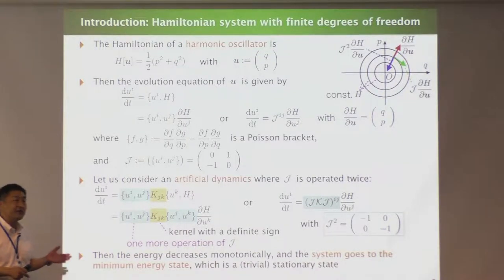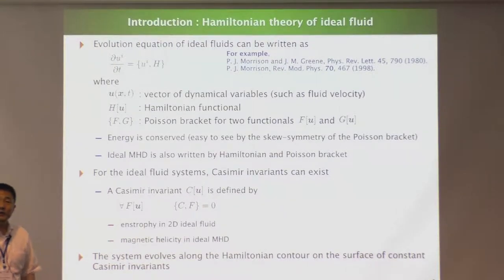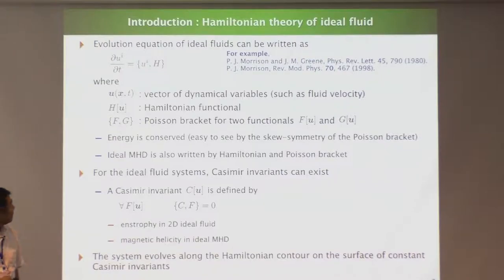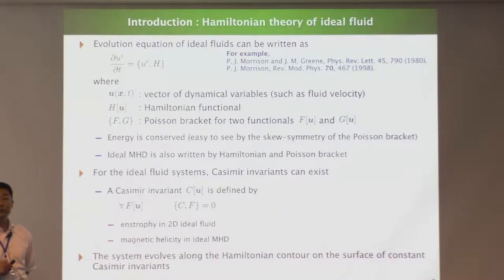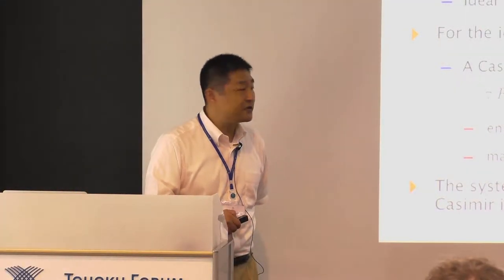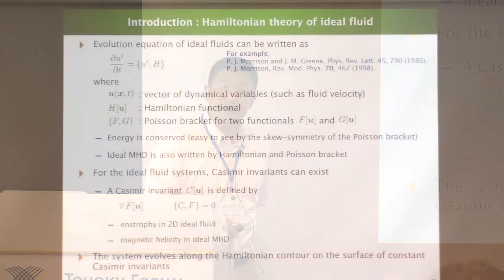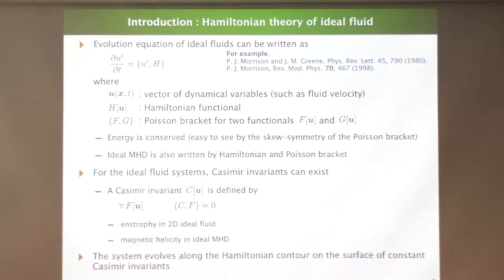Ideal fluid can also be written using Poisson brackets and a Hamiltonian. In this case, U is a field variable like the velocity field or magnetic field. The Hamiltonian H is given by this expression, and this is the Poisson bracket for the fields. Without dissipation the energy is conserved, because this is a Hamiltonian system. The ideal fluid system has another type of invariant called the Casimir invariant, defined by the equation shown here.